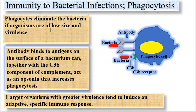For small bacteria with low virulence, these bacteria will be eliminated by phagocytosis. As can be seen here, this is a phagocytic cell, and on the surface of the phagocytic cell we find receptors for complement C3b, and we also find receptors specific for IgG antibodies.